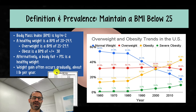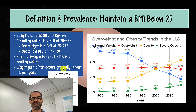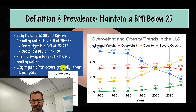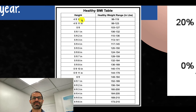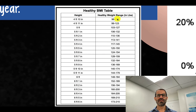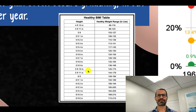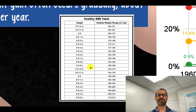In terms of how we gain weight, weight gain usually occurs in adulthood by about a pound a year — it's not a sudden change, it accumulates over time. To determine your BMI, you can look at your height on this chart and find the BMI that corresponds to 20 to 24.9 for your height. This will tell you what your healthy weight range is.